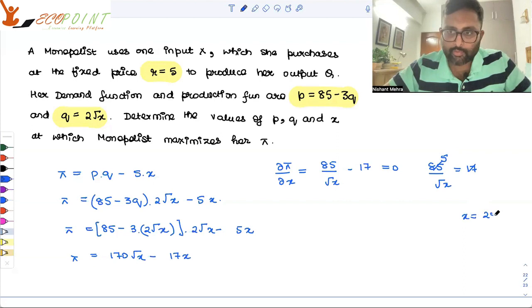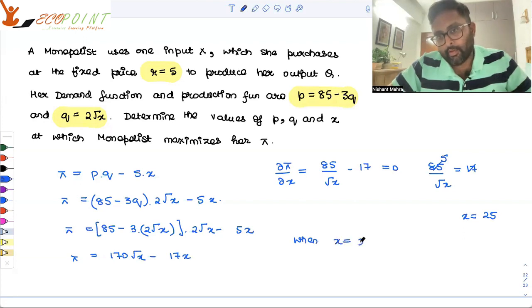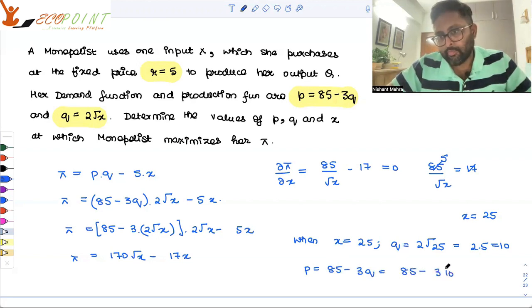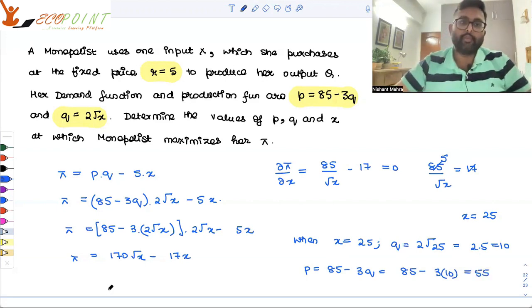So x comes out to be equal to 25. When x is 25, what is q equals to? 2 root x, which is 10. What is p equals to? 85 minus 3q. That is 55, right?